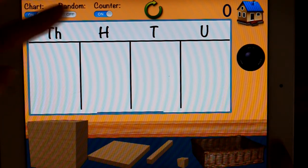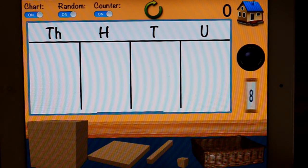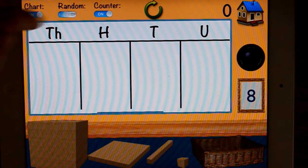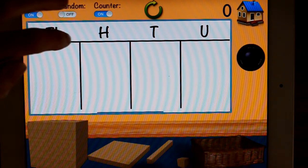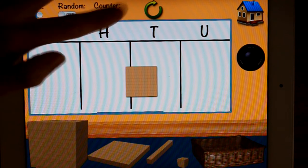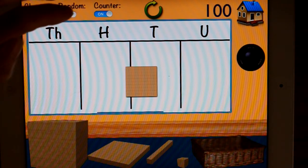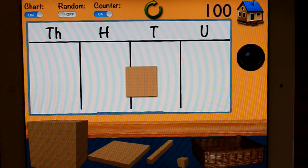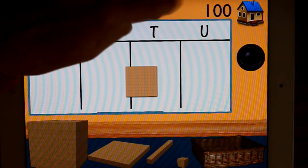You've got your random number generator for playing games. Make the largest number, make the smallest number. And a counter, that's useful too, turn that off, turn that on. And of course you can take a photo if the students are playing games by themselves to prove it to you that they've actually done something.